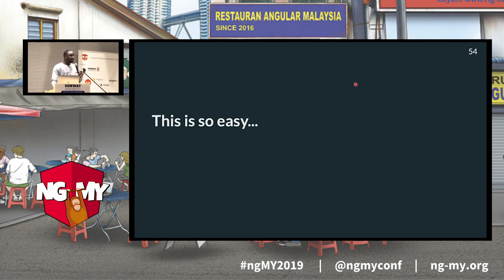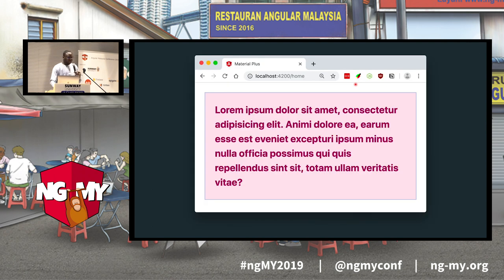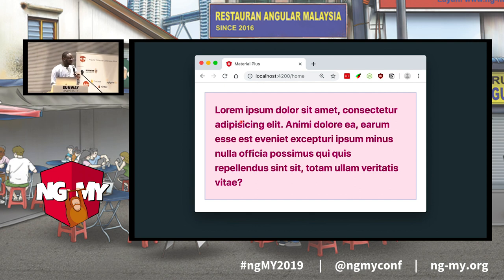If you want your own component to support theming the same way Angular Material components do — so a component can be used in an Air France application with one theme and a KLM application with different colors — this is not so easy. Let me take an example: I want to build an alert component with padding, margin, a lighter secondary background color, darker text, and a primary-colored border.